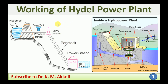Looking at the line diagram: the water is stored in the reservoir due to the dam construction — the dam is a wall constructed to store the water of the flowing river. A surge tank is connected to avoid back pressure. There is a valve control house to control the flow, and the pipeline connecting this — called the penstock — connects the water flow from the dam to the powerhouse. In the powerhouse the turbine runs, connected to the electrical generator, electricity is generated, and the water is discharged to the tail race.